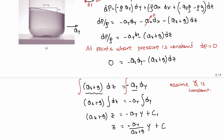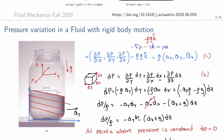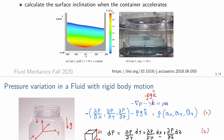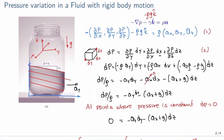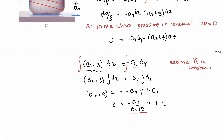Plotting these isopressure lines on top of our container, they are straight lines with the negative slope given by ay divided by (az + g), parallel to the free surface. Comparing with the simulation, the isocolor lines — green, yellow, and red — correspond to these isopressure lines. The most important result of this section is that the slope of the isopressure lines is the ratio of the y-acceleration to the sum of the z-acceleration and gravity.